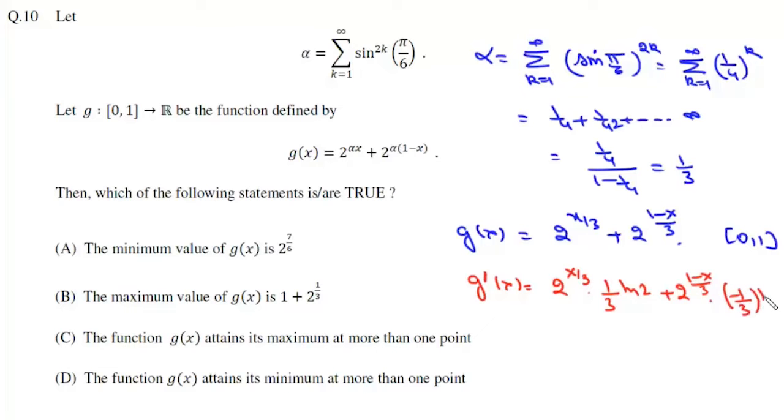And if we put it equals to 0, from here we get x by 3 equals 1 minus x by 3, or value of x is 1 by 2.